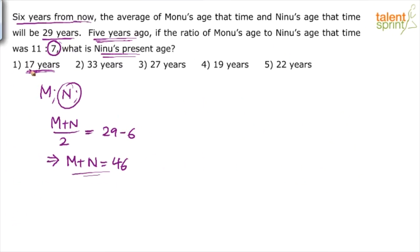If Ninu's present age is 17 years, five years ago Ninu's age was 12 years. Is 12 a multiple of 7? No. We know that five years ago Ninu's age should be a multiple of 7, and five years ago Monu's age should be a multiple of 11. Since 12 is not a multiple of 7, the first option is eliminated.